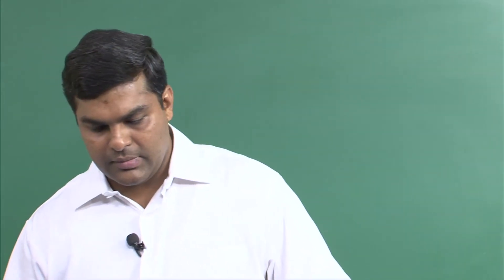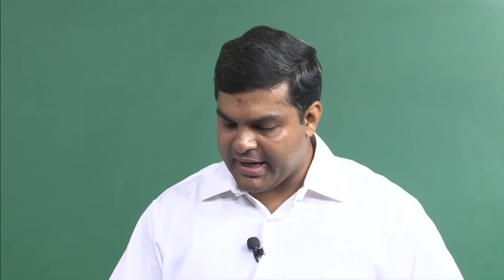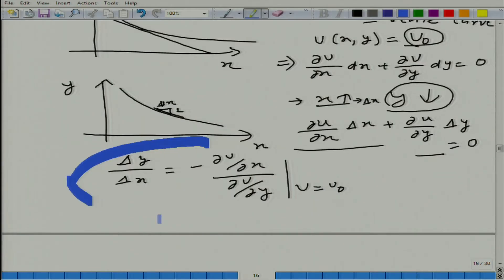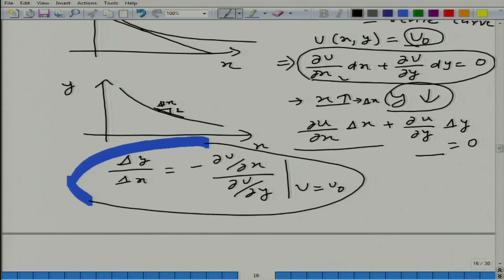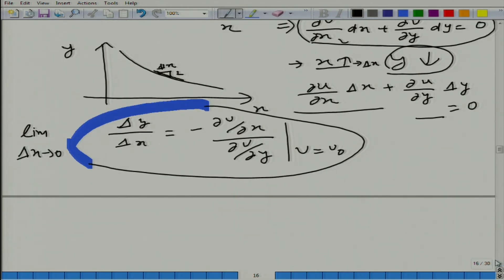So, ultimately this is what we get. Same thing you can get from here. This is mathematical route, this is a mix route that graph as well as mathematics, nothing fancy. From here, what we are doing is we are taking limit Δx goes to 0, and we are obtaining the slope.